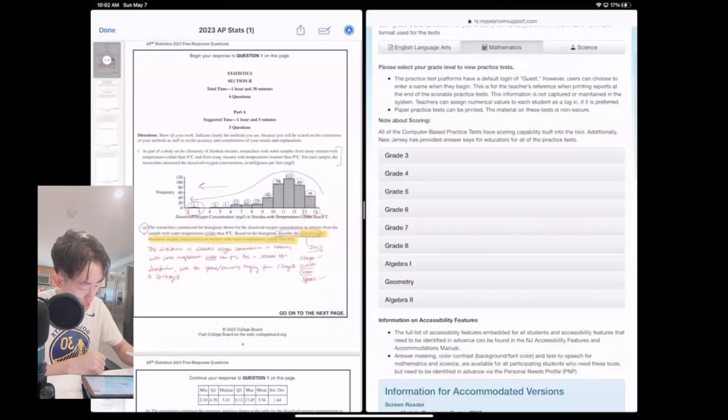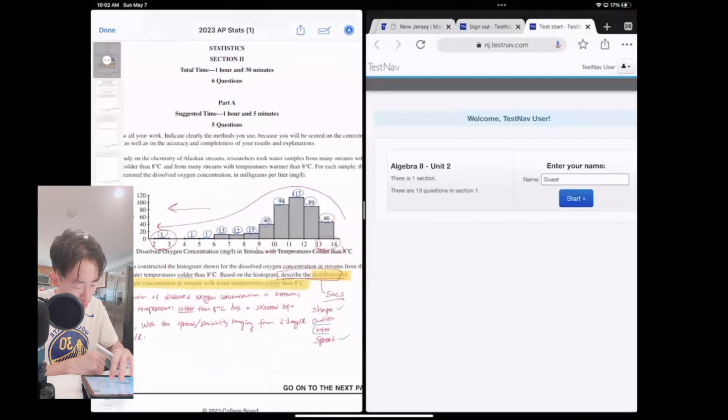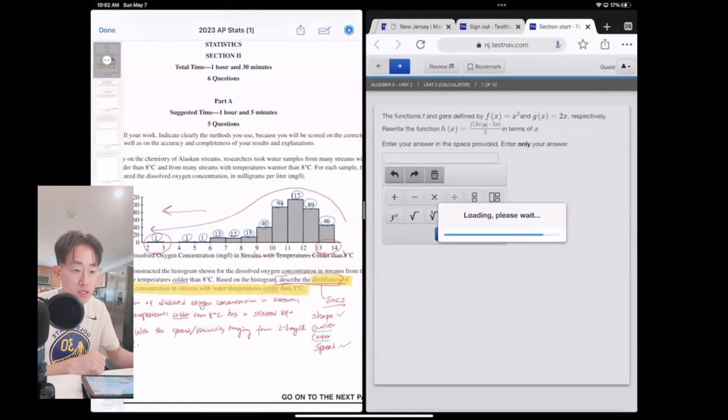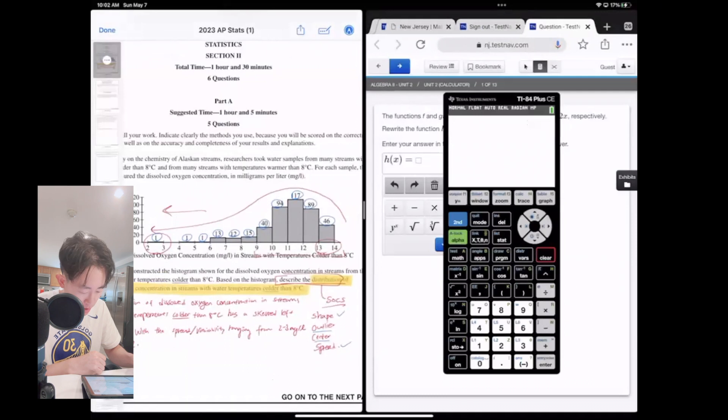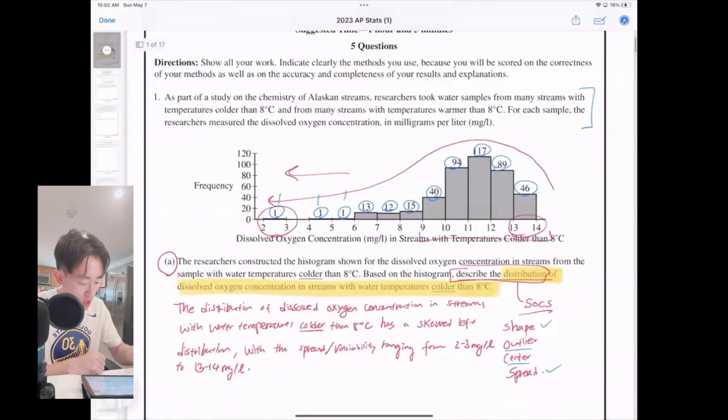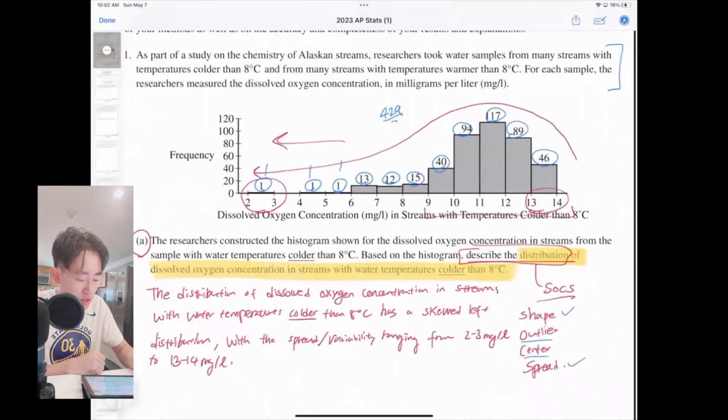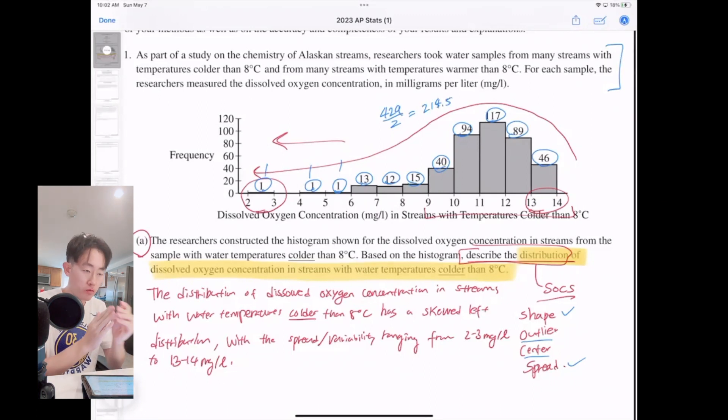So here I'm going to pull up our calculator. Now we're simply just going to add up all of these frequencies together. So on the calculator, let's say we have 1 plus 1 plus 1, which is 3, plus 13 plus 12 plus 15, 40, 94, 117, 89, and then 46. So you add everything up and you basically get 429. So 429 in total. And then when you divide that by two, that comes out to be about 214.5, which means we have an odd number and the middle number or the median number for this will be the 215th term. And so that's where we are going to look for the median, the center.